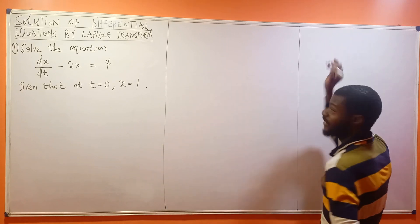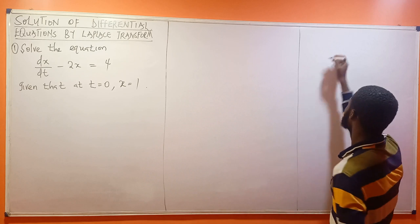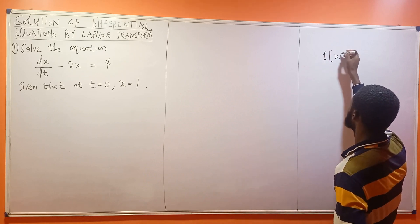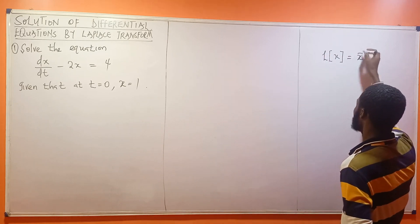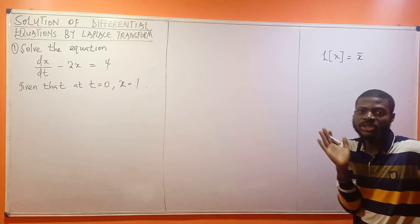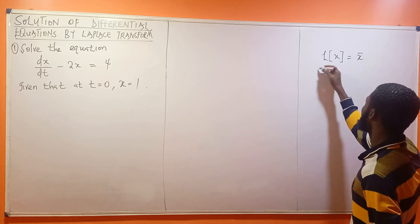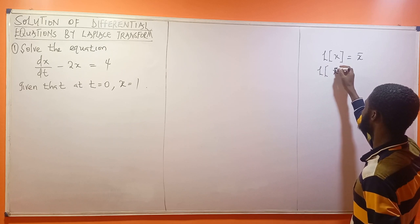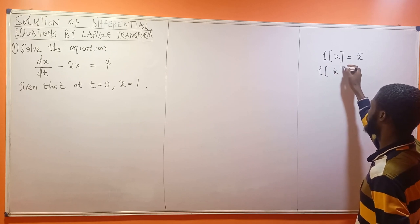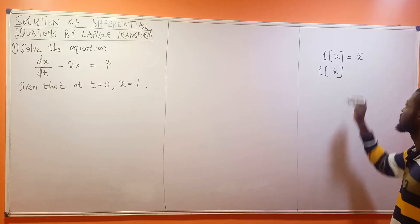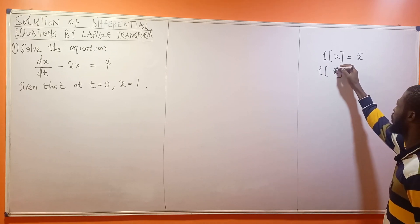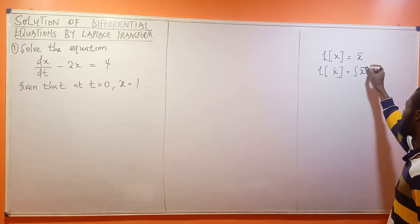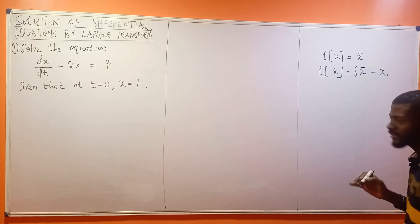The Laplace transform of S is equal to S bar — this is the first thing you want to take into consideration. The Laplace transform of the first derivative, S dot, is equal to S times S bar minus S naught.